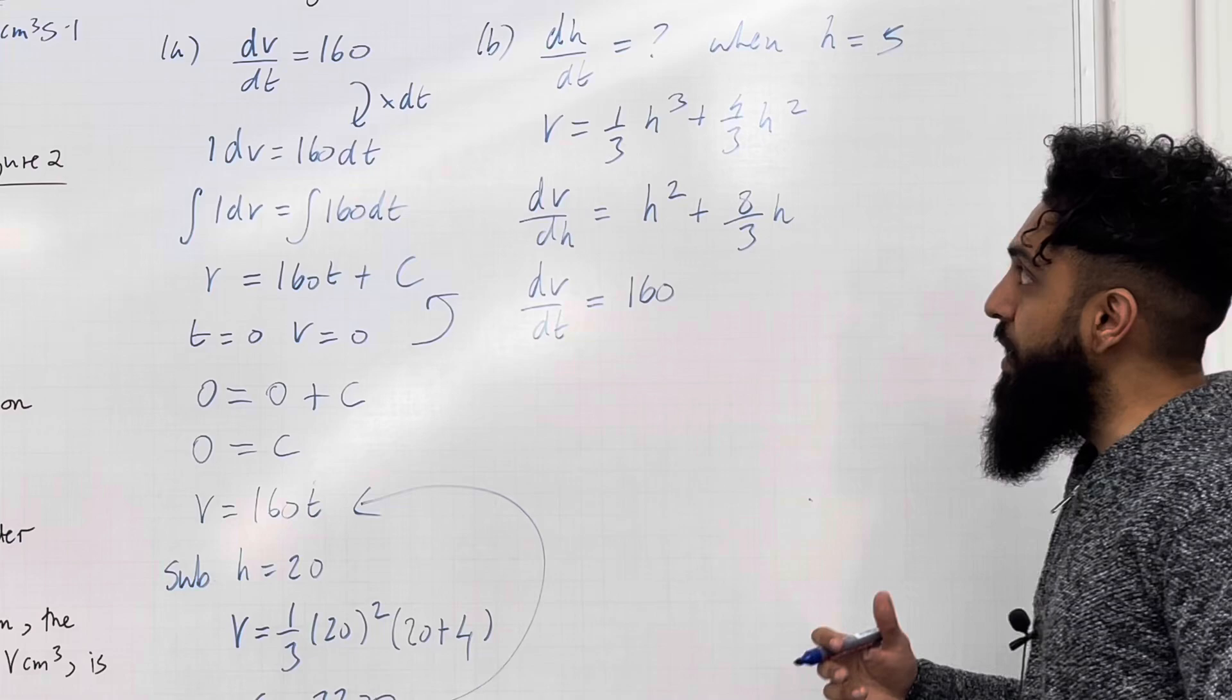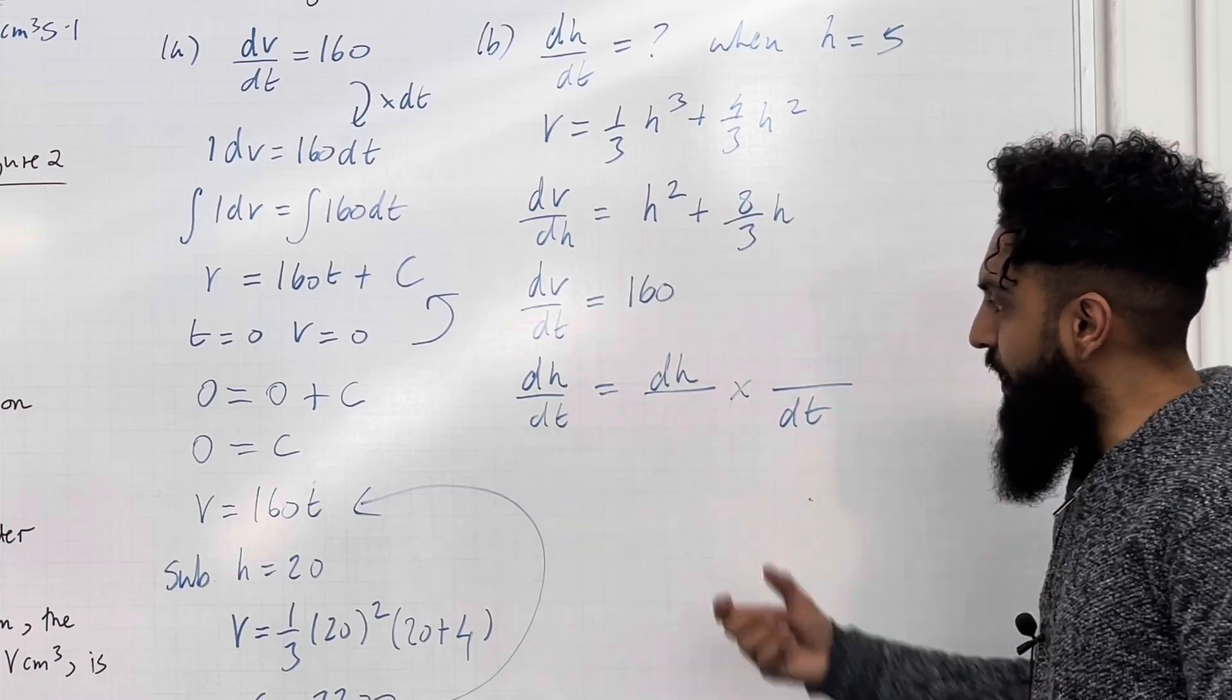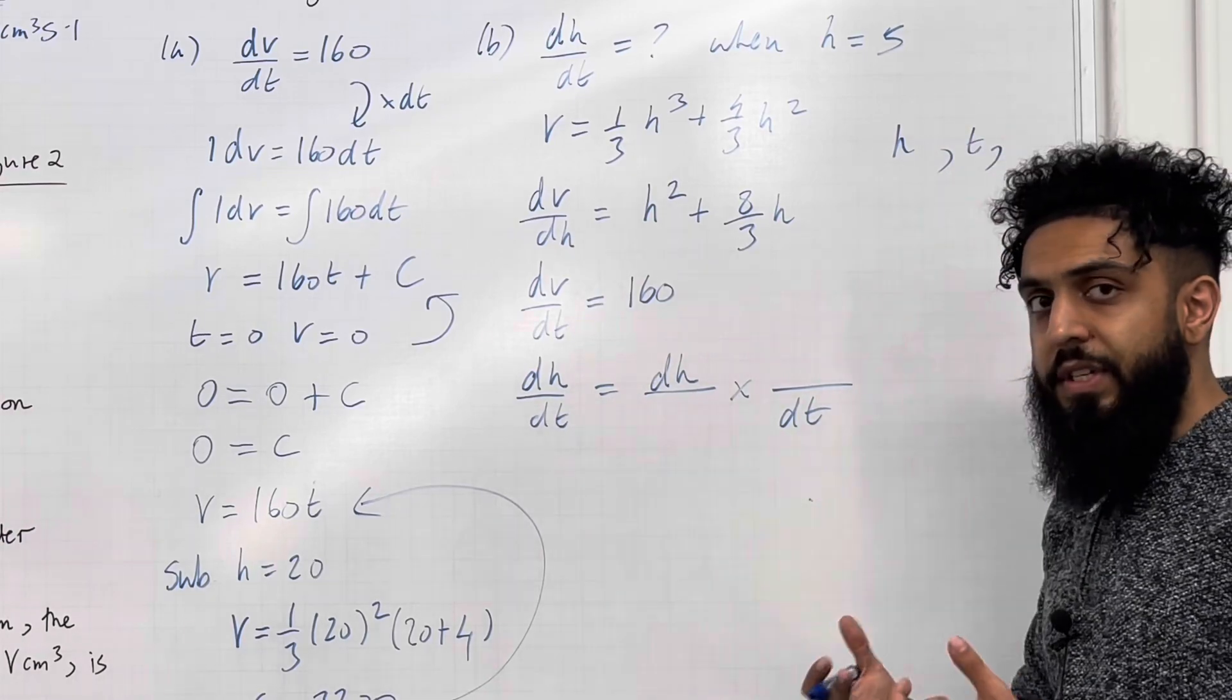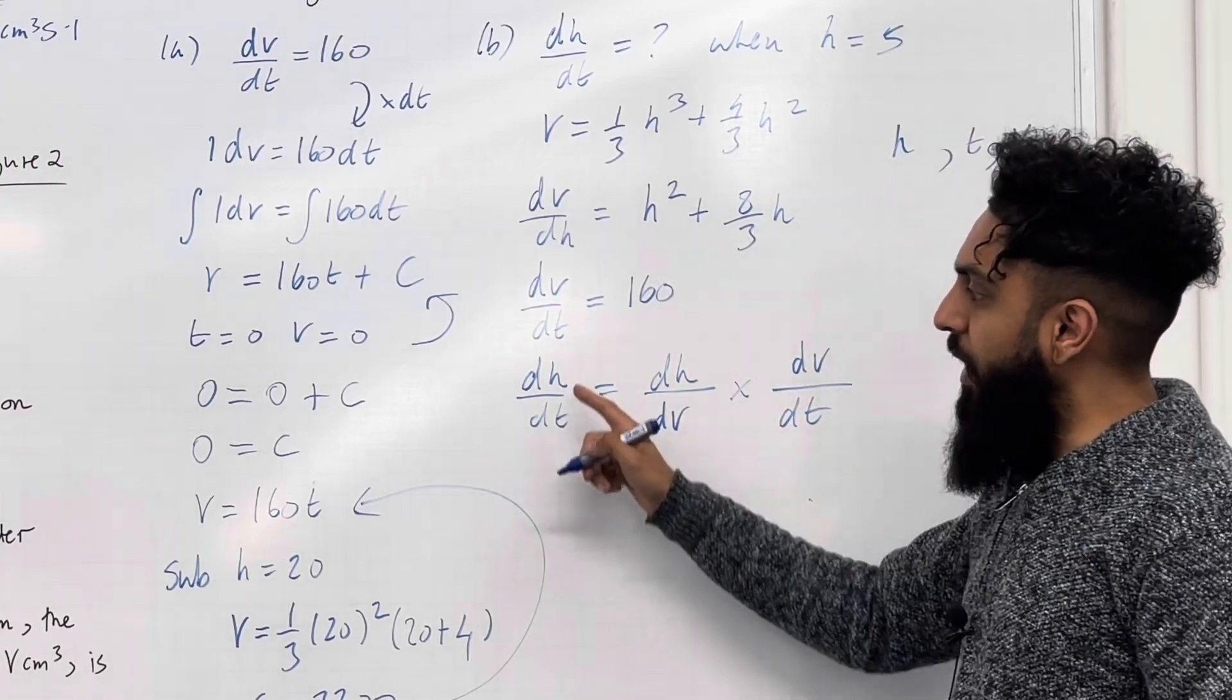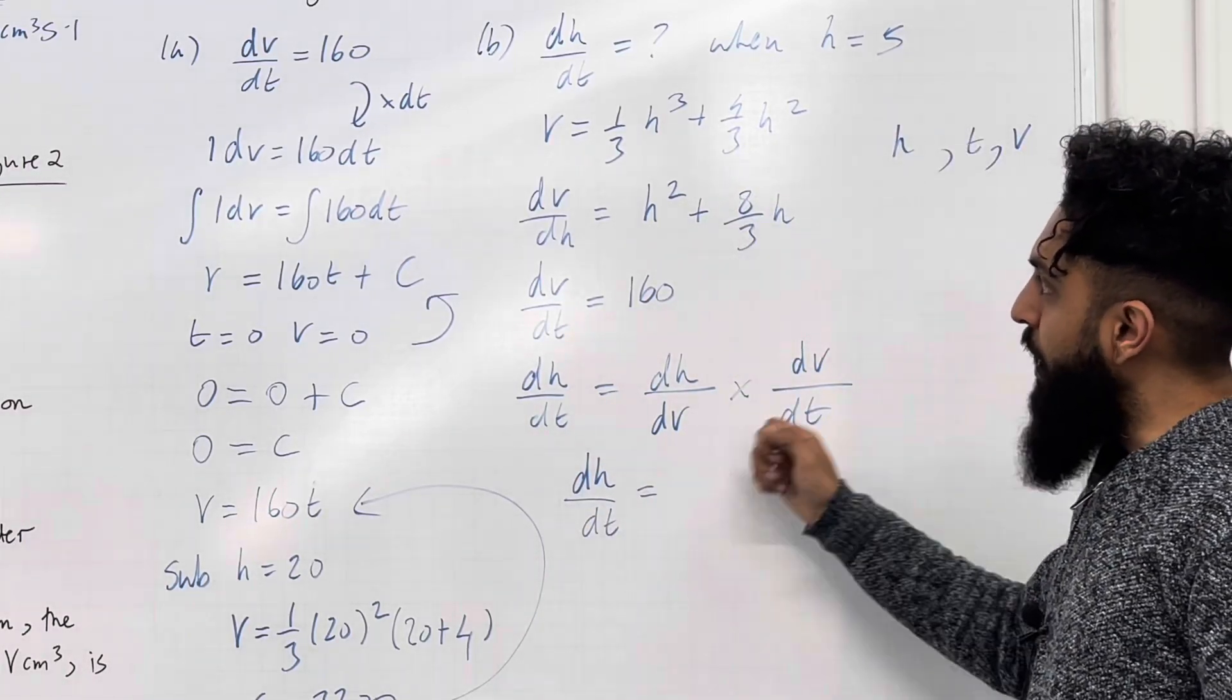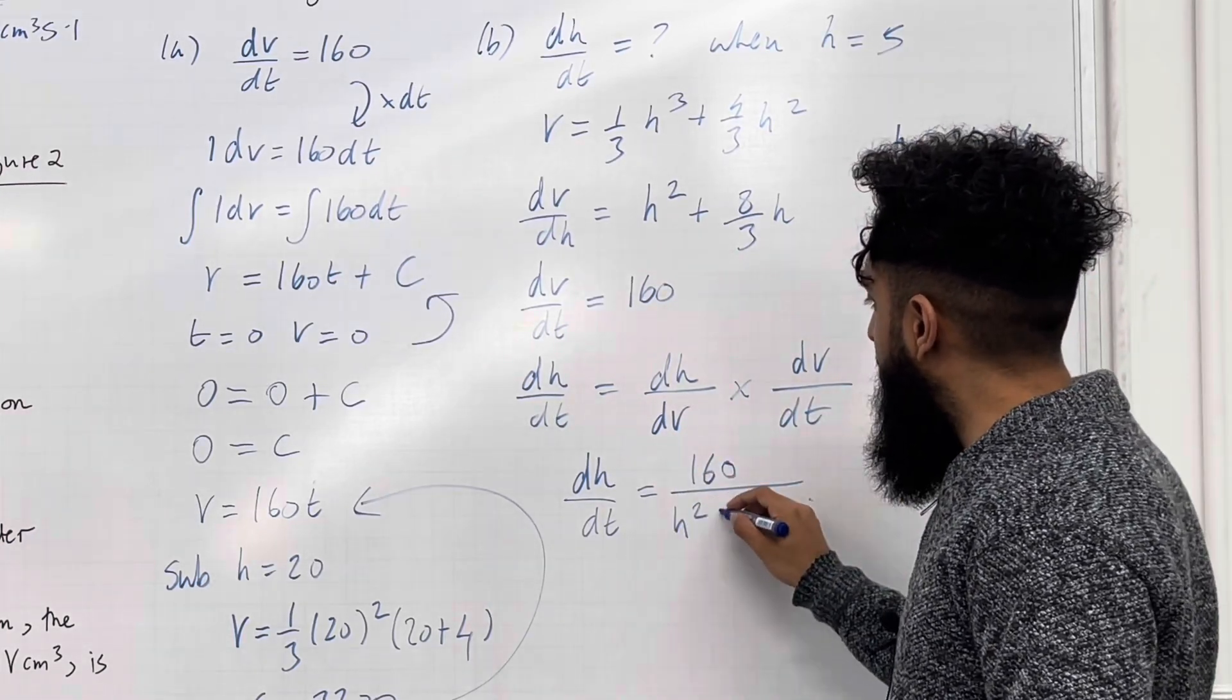Now, I can connect the two differentials in order to find dh over dt. dh over dt equal dh over blank multiplied by blank over dt. We're going to fill in the blanks. We call this the chain rule for differentiation. So far, we've used the variable h and we've used the variable t. The third variable that we haven't used up is v. So, in this gap and this gap, we can put dv. The dv's cancel, giving us dh over dt as required. So this makes sense. The left is equal to the right-hand side. Now, dh over dt is going to equal dh over dv. If we go back to dv over dh, we take the reciprocal of that. So, that's 1 over that multiplied by dv over dt, which is 160. So, we have 160 over (h² + 8/3 h).